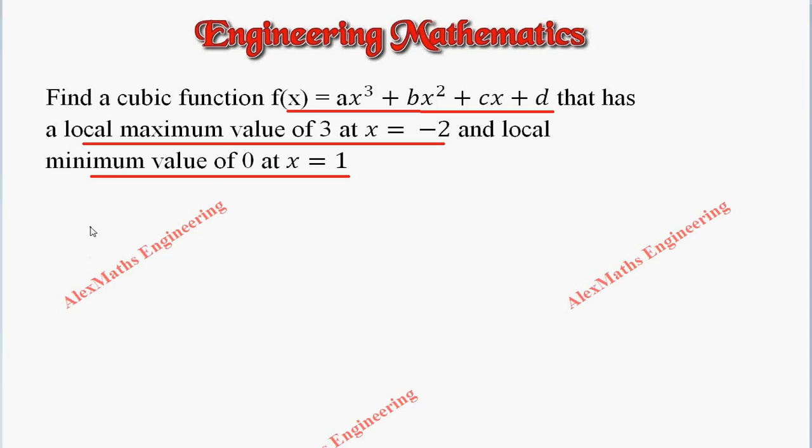Now let's find f'(x). We get 3ax² plus 2bx plus c. We also have the critical values x equals minus 2 and x equals 1.